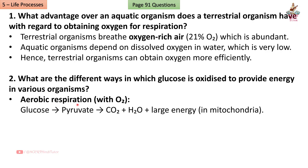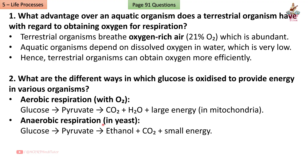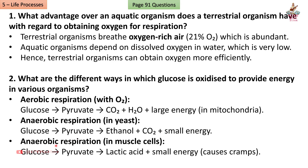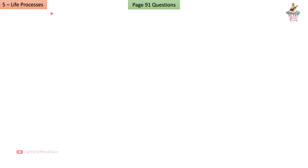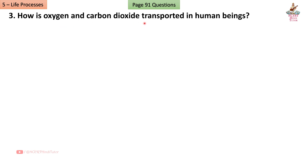Question 2: What are the different ways in which glucose is oxidized to provide energy in various organisms? Answer: Aerobic respiration — with oxygen, glucose is broken down to pyruvate, then CO2 + H2O + large energy, in mitochondria. Anaerobic respiration — in muscle cells, glucose to pyruvate to lactic acid + small energy, causing cramps.